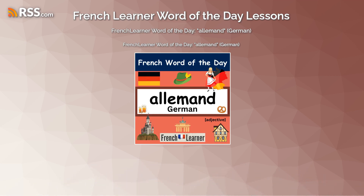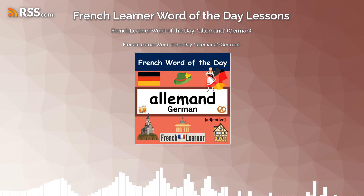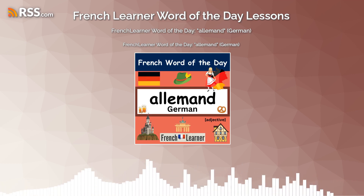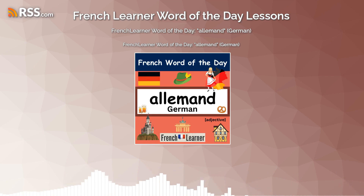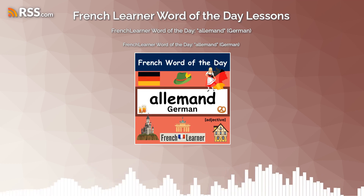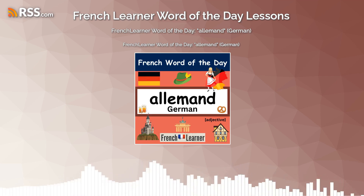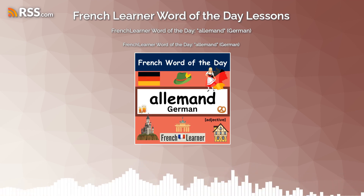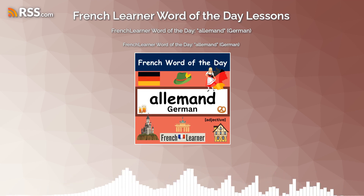Next sentence. Jacques is going to buy a German car. Jacques va acheter une voiture allemande. For this sentence, I'm going to pronounce the E on acheter, A-C-H-E-T-E-R, pronouncing that as acheter rather than acheter, and I'm going to do the same thing for the word allemande where I'm going to pronounce that E. So: Jacques va acheter une voiture allemande.